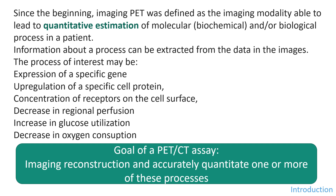Since the beginning, PET was defined as the imaging modality able to lead to quantitative estimation of molecular and biological processes in a patient. Information about the process can be extracted from the data in the images. The process of interest may be the expression of a specific gene, the upregulation of a specific cell protein, the concentrations of receptors on a cell surface, the decrease in regional perfusion, the increase in glucose utilization, or the decrease in oxygen consumption. The goal of a PET-CT assay is to lead to image reconstruction and accurate quantification of one or more of these processes. In this presentation we will describe the general imaging practice and discuss steps and characteristics of equipment that are associated with accurate quantification of these processes.